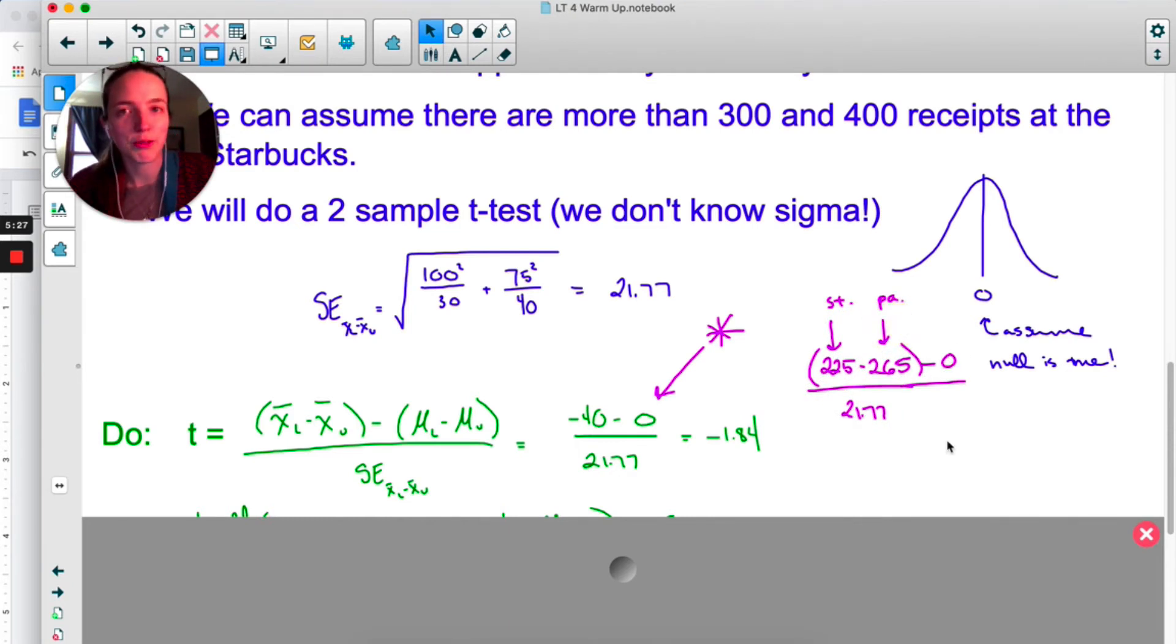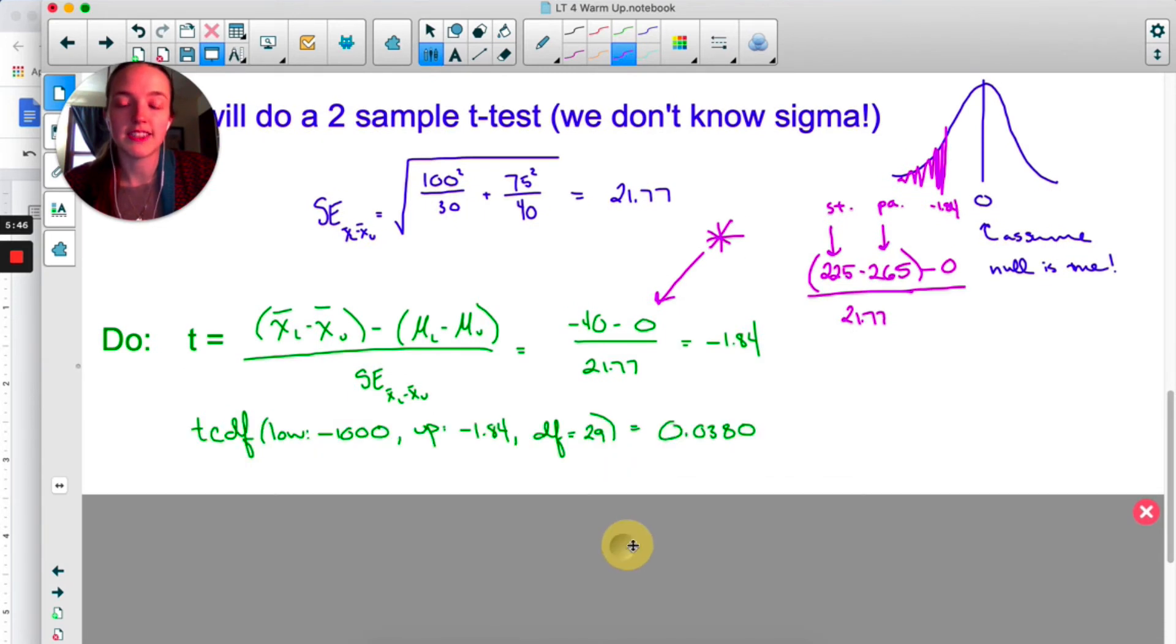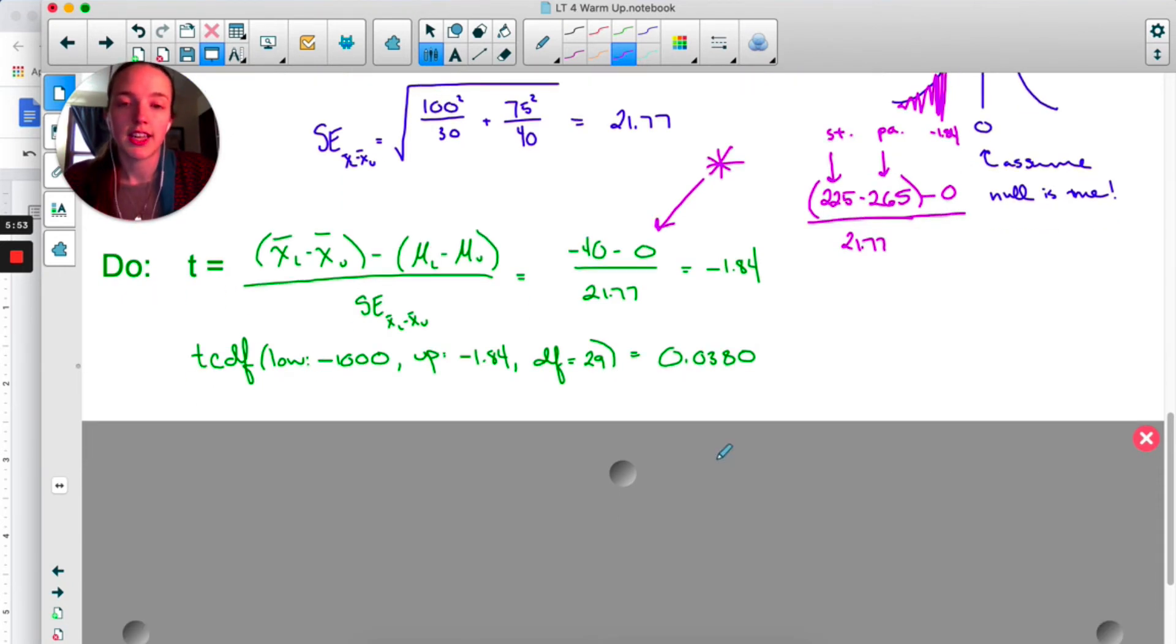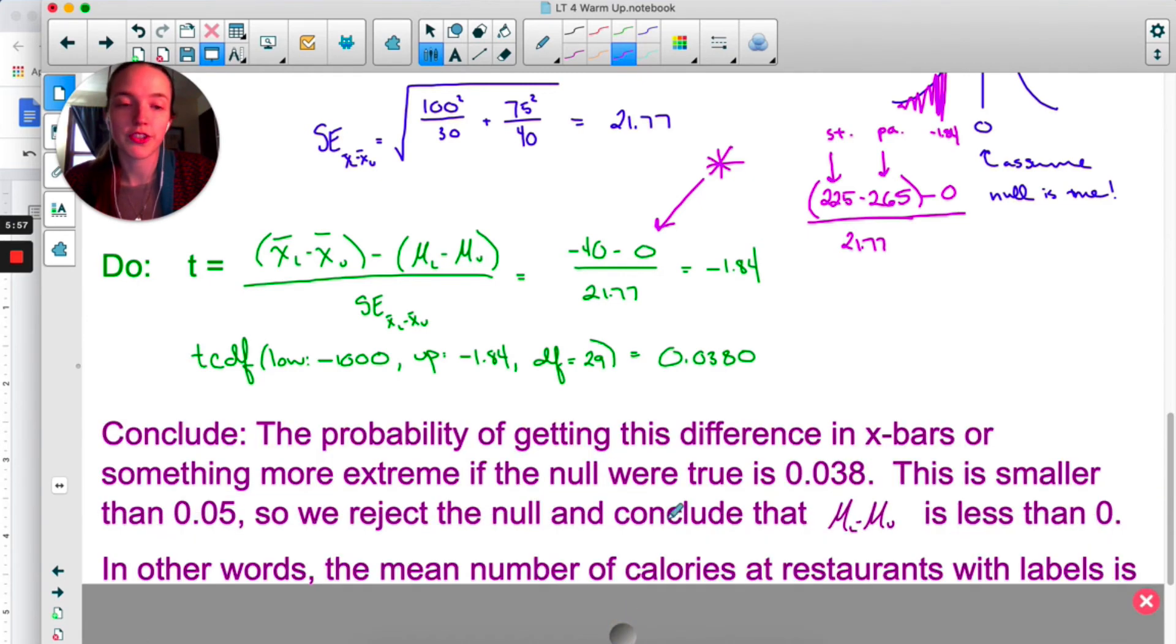We get a t-value of negative 1.84. So that seems like it might be good evidence against the null—that's somewhere over here. We were interested in less than, so we want that area to the left. I'm using tcdf. Degrees of freedom I used 29 because that's the smaller degree of freedom of the two, 30 and 40. And we get a p-value of 0.038, which is pretty small.